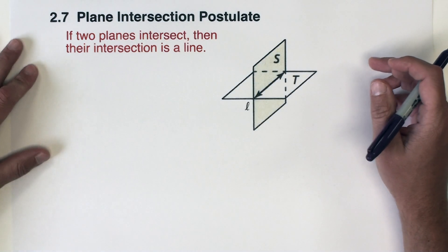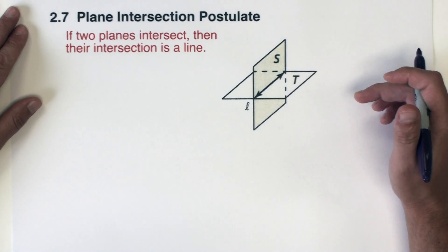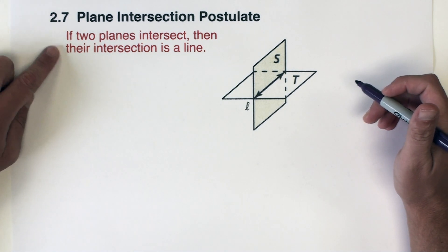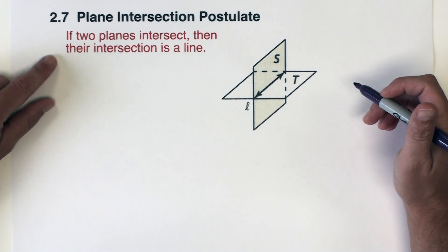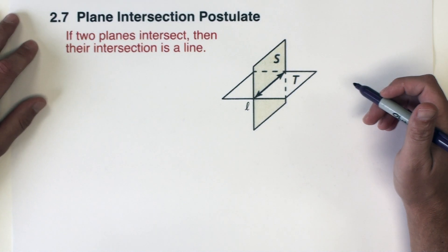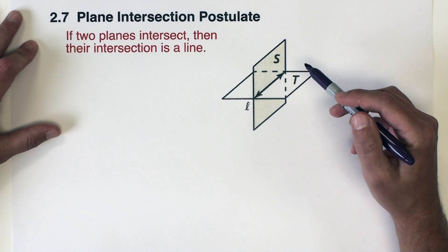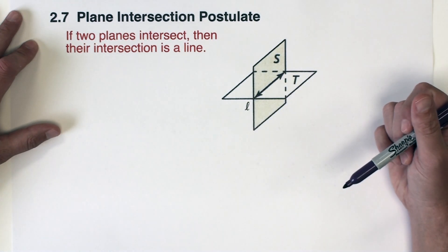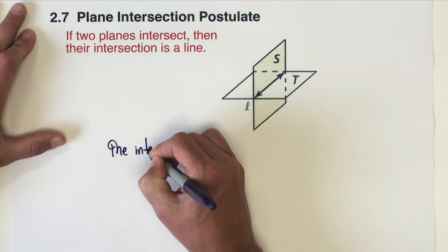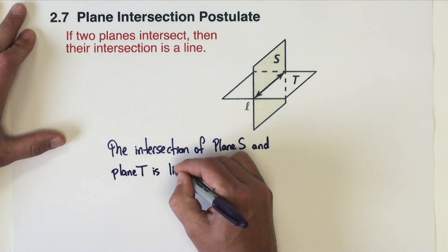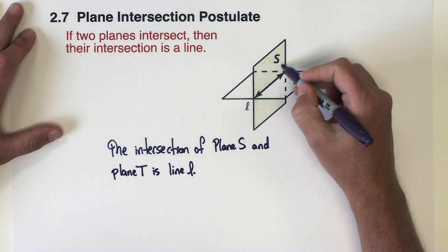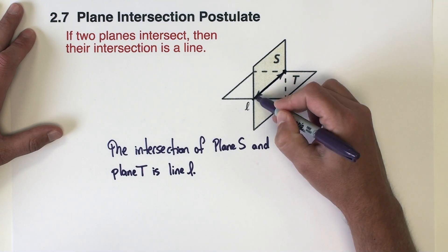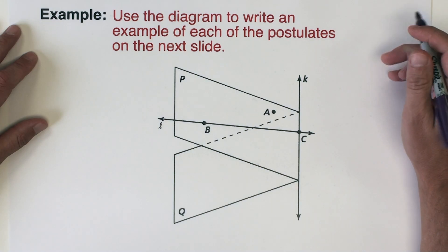Our final postulate presented in this video is the plane intersection postulate, and it says if two planes intersect then their intersection is a line. To illustrate that with this diagram I might write: the intersection of plane S and plane T is line L.